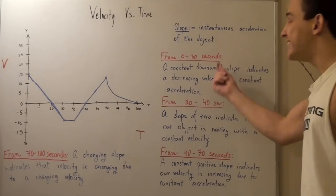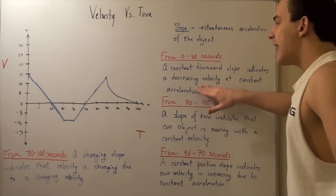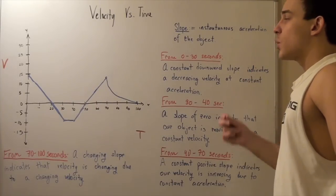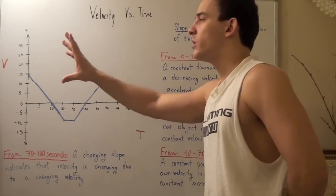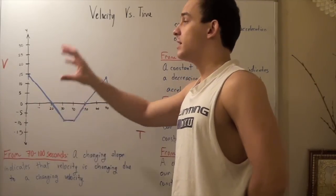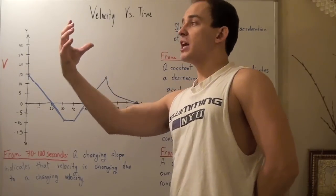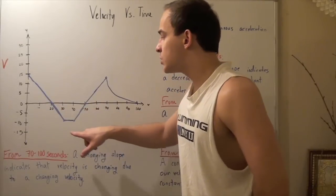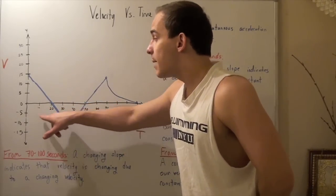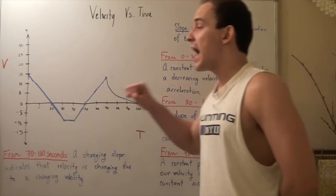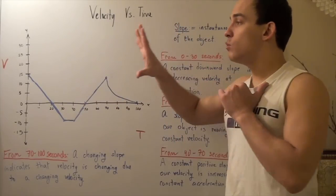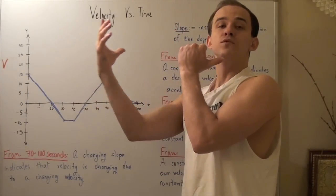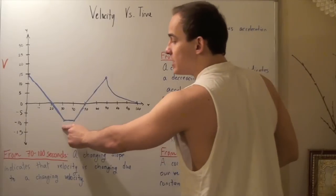A constant downward or negative slope indicates a decreasing velocity, meaning our acceleration is constant but in the opposite direction of our velocity. Our object is moving in the positive direction and at time equals 20 seconds it slows down to a velocity of zero. At that point it changes direction and begins moving in the negative direction, as indicated by the velocity increasing in the negative direction from 20 seconds to 30 seconds.